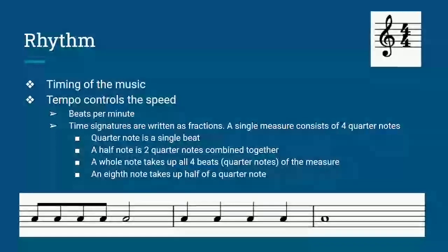Most music is based around the number 4, with a single measure being defined as a four-quarter note, known as 4/4 time signature, where the top number is the number of notes and the bottom is the type of note, which matters very little except for sheet music. Besides 4, the other common numbers used are 3 and 6. Another common time signature is 6/8. Tempo and time signature aren't necessarily played by instruments of the song, but they can be implied.